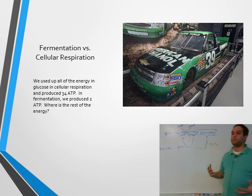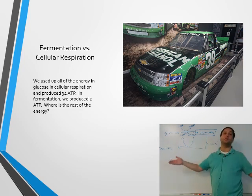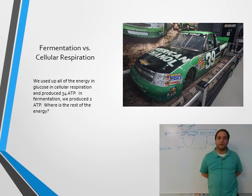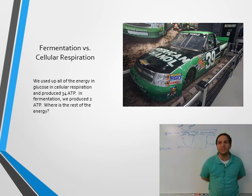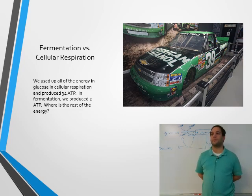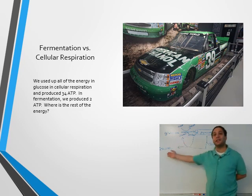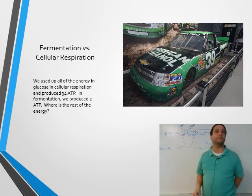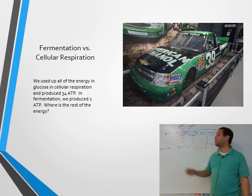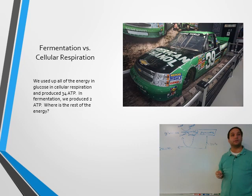Cellular respiration produces 30 to 34 ATP. Fermentation produces two. So where's the rest of the energy? You store the energy in the bonds of the waste product - the waste product has lots and lots of bonds in it.